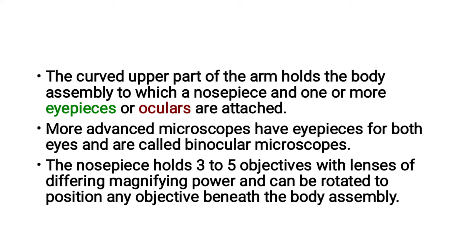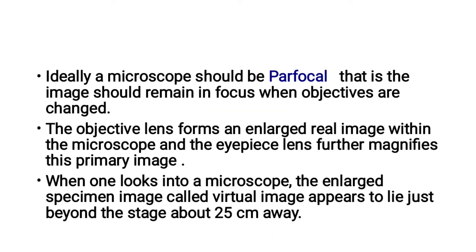The curved upper part of the arm holds the body assembly, to which a nose piece and one or more eyepieces, or ocular lenses, are attached. More advanced microscopes have eyepieces for both eyes and are called binocular microscopes. The nose piece holds three to five objectives with lenses of different magnifying power. It can be rotated to position any objective lens beneath the body assembly. Ideally, a microscope should be parfocal — that is, the image should remain in focus as objectives are changed.